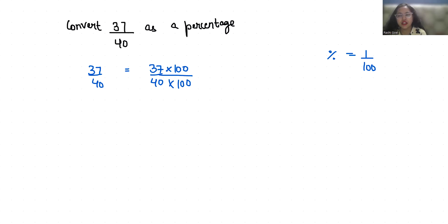So it becomes 3700 by 40 times the denominator 1 by 100. We can write it as 1 by 100. Now we can cancel out this, so 370 by 4.